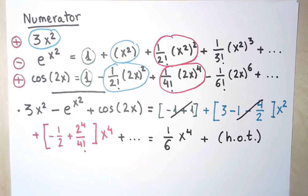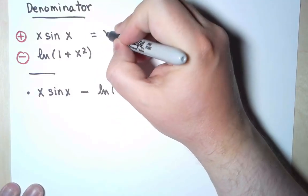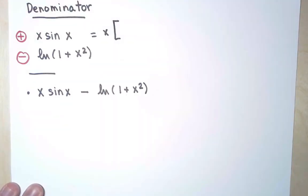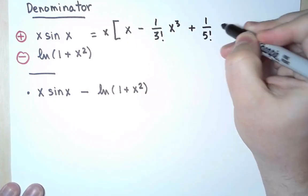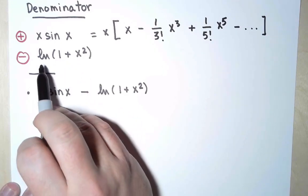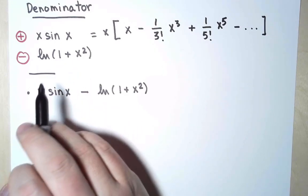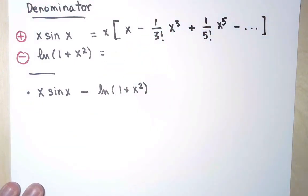In the denominator, I have x sin x - ln(1 + x²). So like before, let's write a power series for each one of them. I have here an x multiplying, and I know how to write the Maclaurin series for sin x. As for the other part, it's ln(1 + x²). And I know what the series for logarithm is. So now I need to use x² instead of x as the variable.